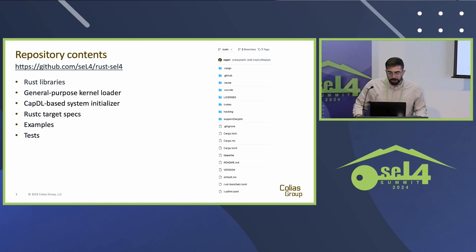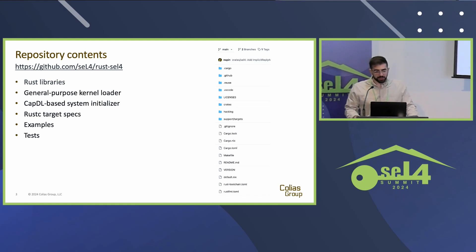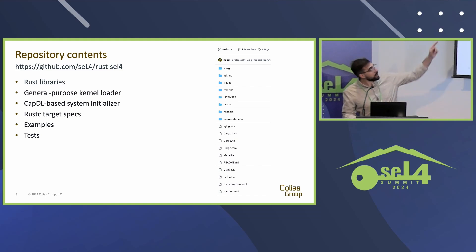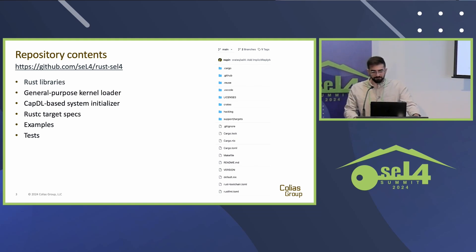This work primarily consists of a bunch of Rust libraries known as crates, and these include bindings to the seL4 API, a runtime for root tasks, a runtime for protection domains, and a whole lot more. There's also a general purpose kernel loader, a CapDL-based system initializer, Rust target specs, examples, and tests. The readme linked for the repo outlines all this and contains links to relevant documentation.